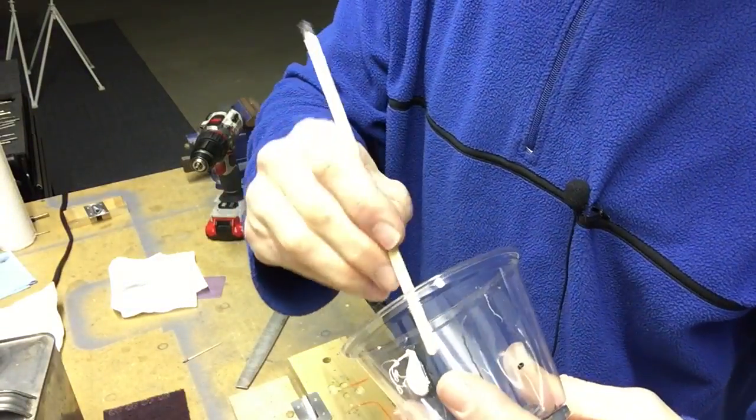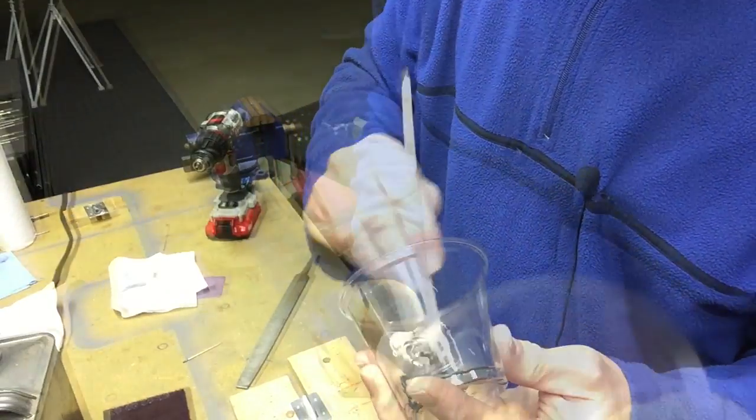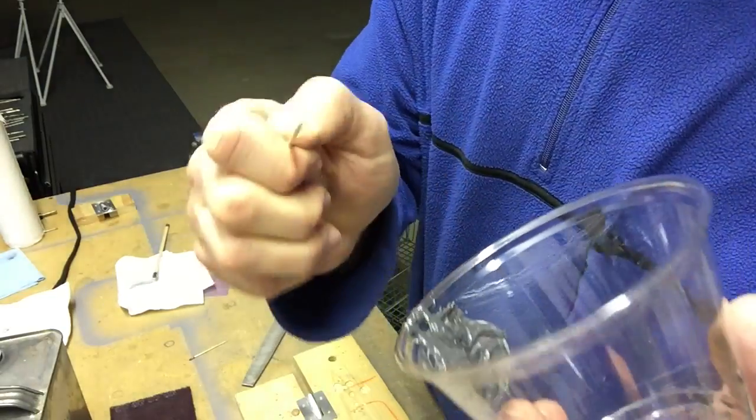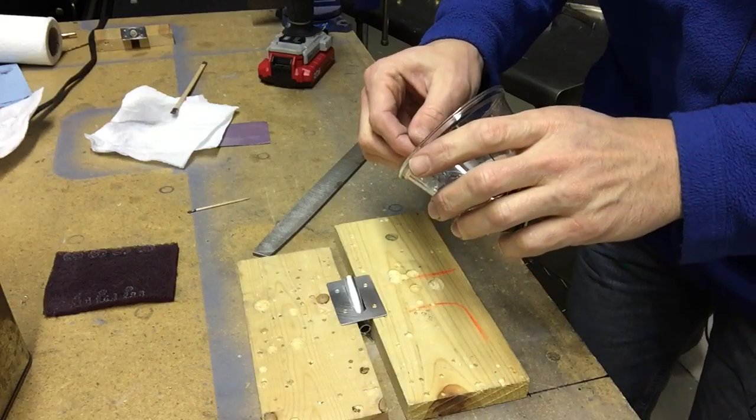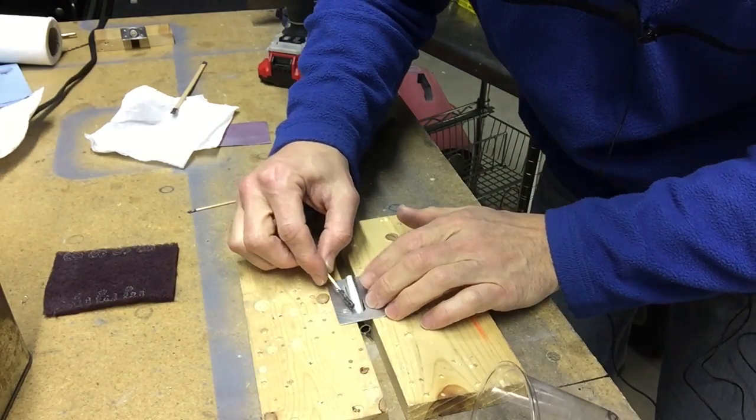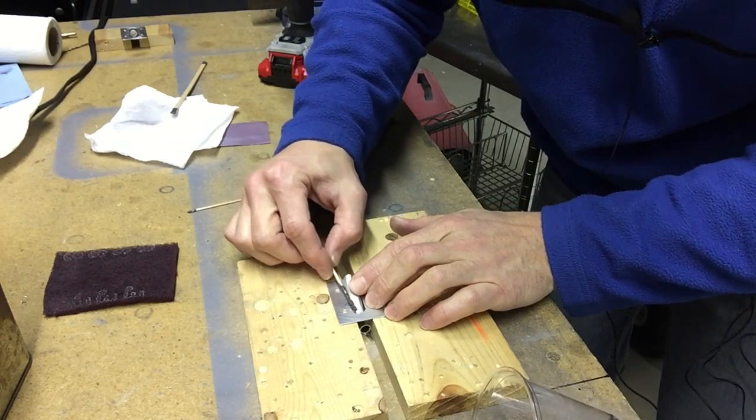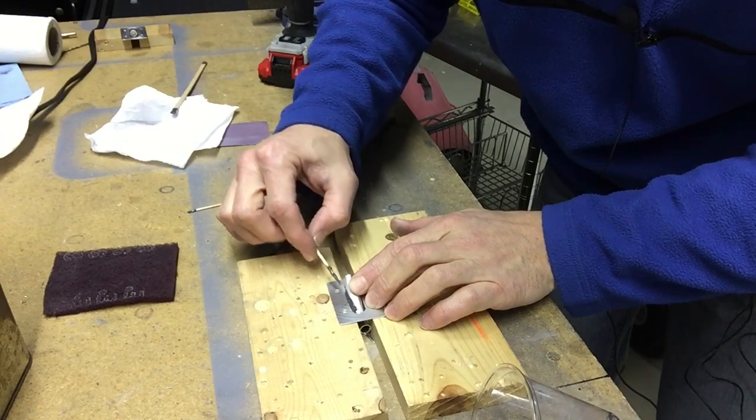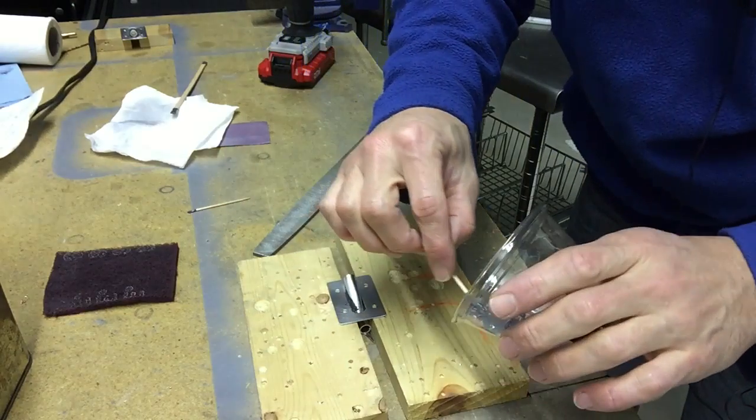Here's our JB Weld. I'm just going to take and mix up. Once you have your JB Weld mixed up, I'm going to use a toothpick and I'm going to try to put this on as neatly as I can. I want to go all the way around this piece so it's completely glued in.